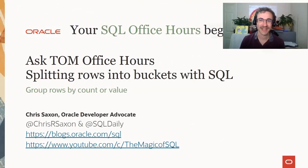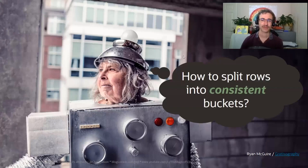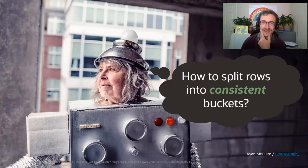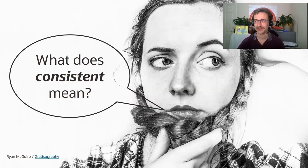Welcome to today's SQL Office Hours session. It's great to be here and help answer your SQL questions. In this session we're going to look at a question that came in on Ask Tom a few weeks ago - someone was asking how do they split rows into consistent buckets. This is an interesting question because there are several different ways you could interpret it, and we're going to look at them as we go through this session.